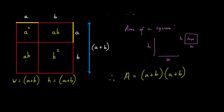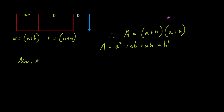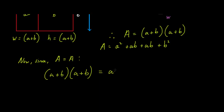We know that the area of this perfect square is (a + b) multiplied by (a + b). But we can also say that the area of this perfect square is a squared plus ab plus ab plus b squared. Since area equals area, (a + b) multiplied by (a + b) equals a squared plus ab plus ab plus b squared.